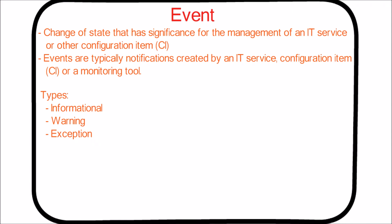Events can be classified into three categories. Informational: an event that does not require any action — regular operation. Warning: an event that is unusual but not an exception, and requires closer monitoring. Exception: an event signifying a service or a device is operating abnormally.